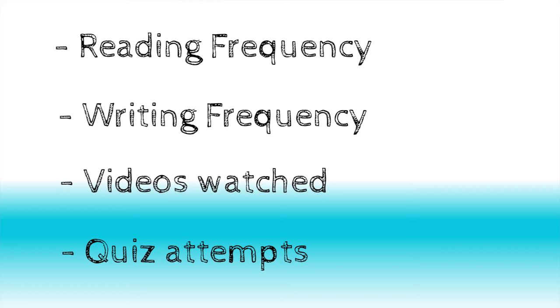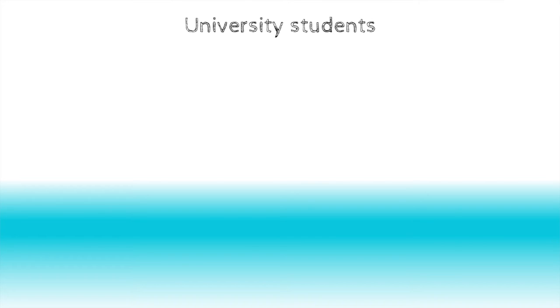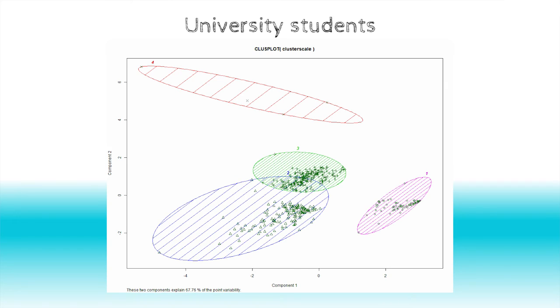Because of the structure of the examined MOOC participants, which is obligatory for university students and open for external participants, the clustering was done on both of the groups. Now let's look at the first case, which is the university students. We have come up with four classes. The first cluster is a group with low activity among all the variables. There were only 10 students there, and most of them have a high dropout rate.